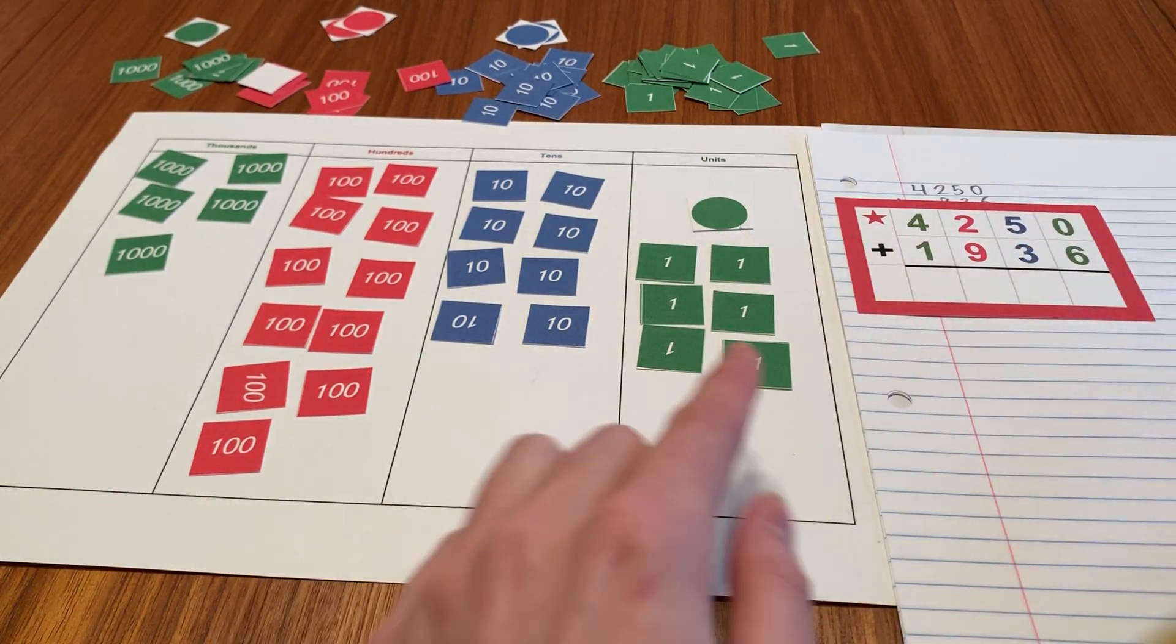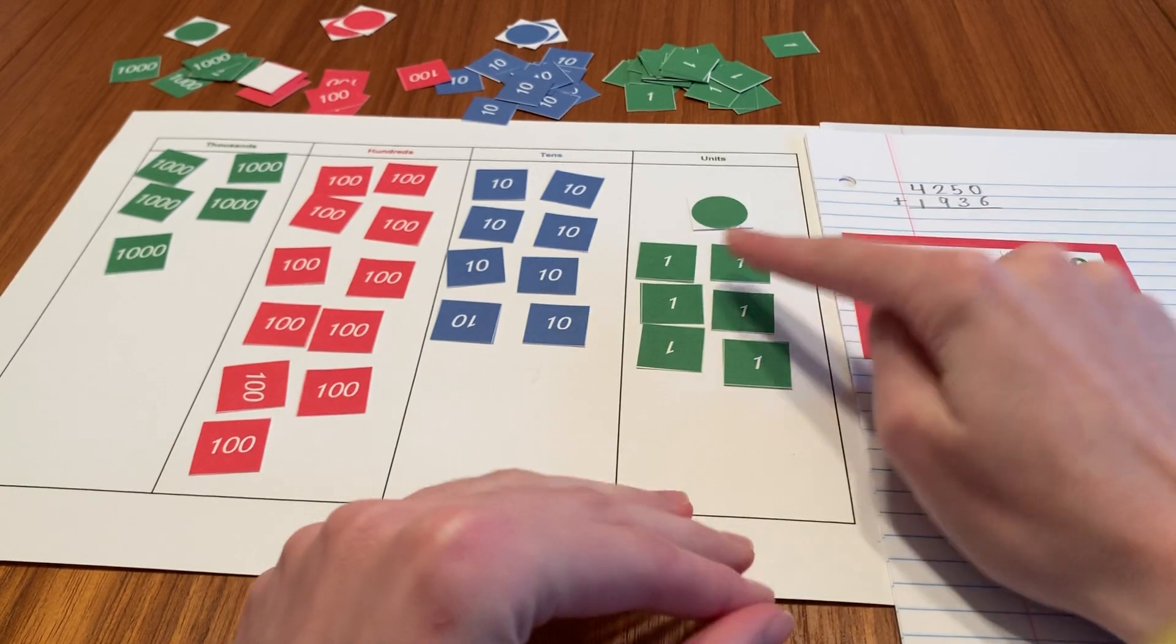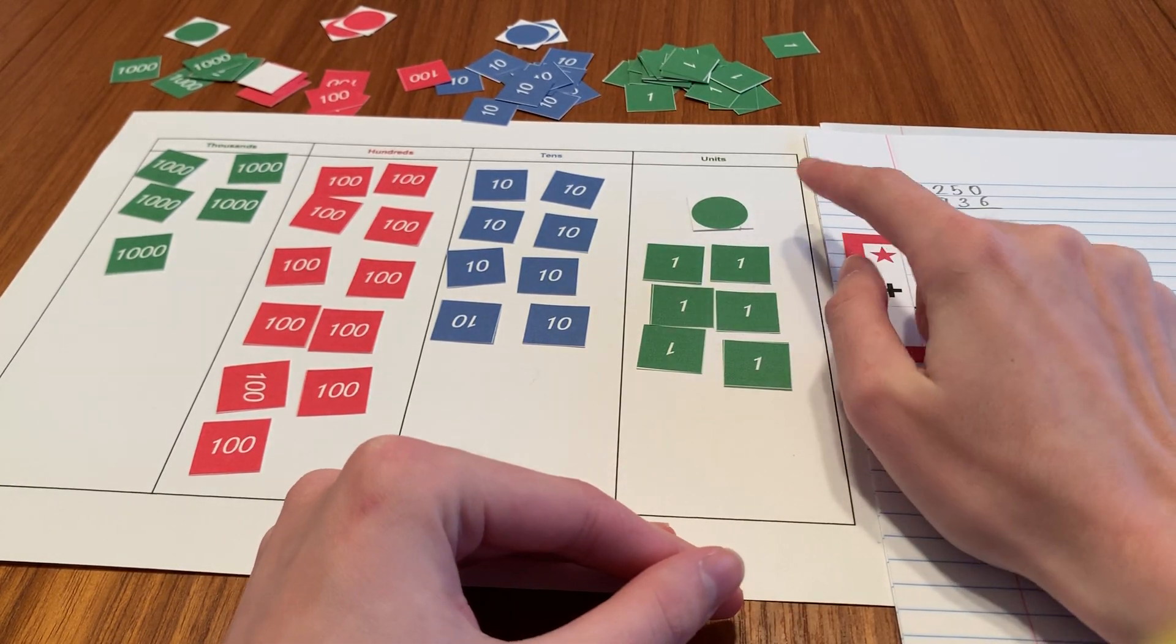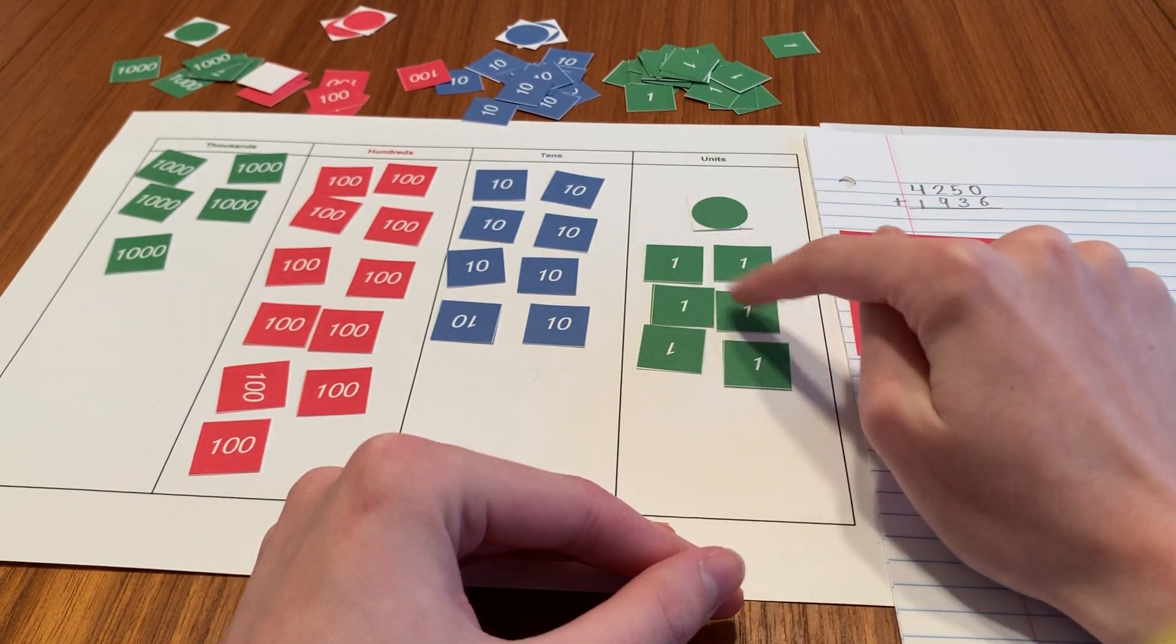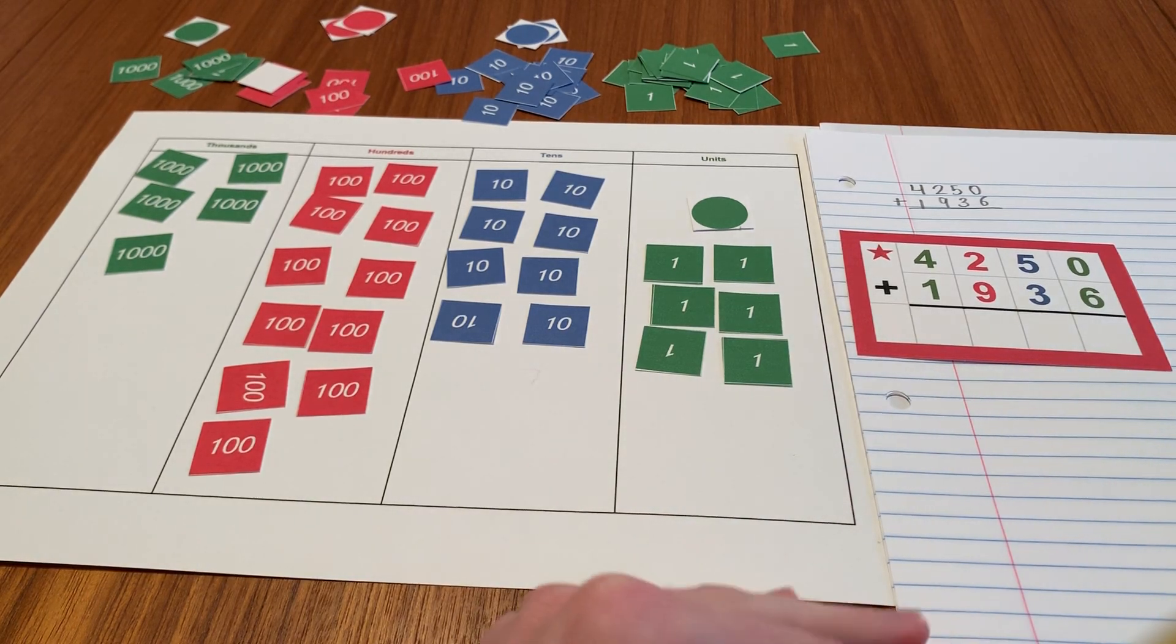So I always like to start in my units place. And I'm going to count them up. Zero plus one, two, three, four, five, six equals six.